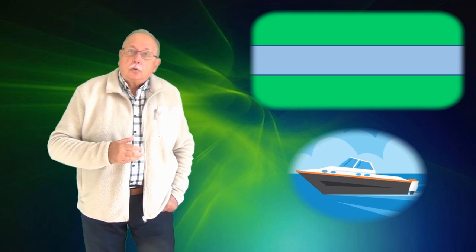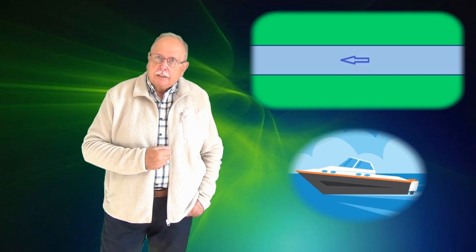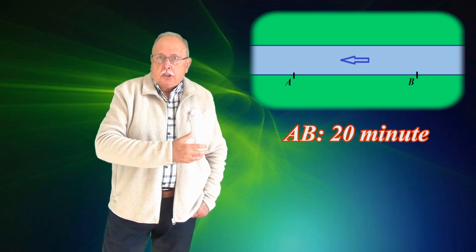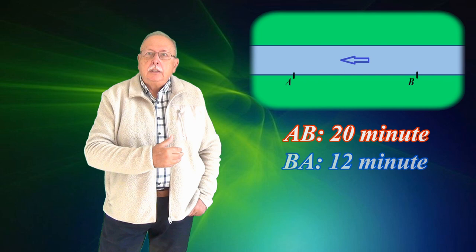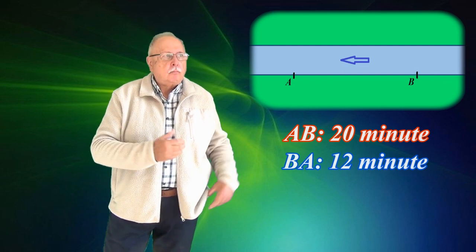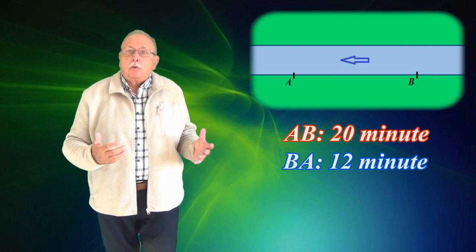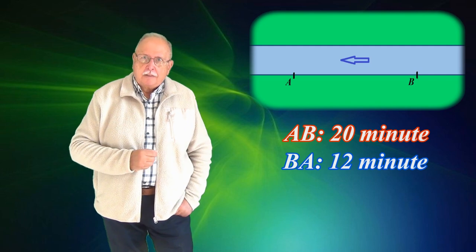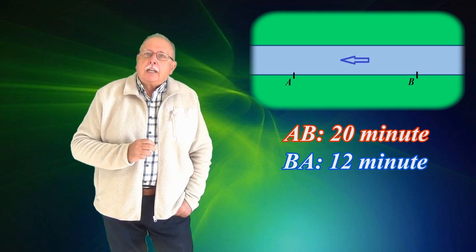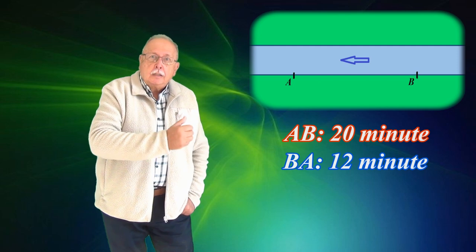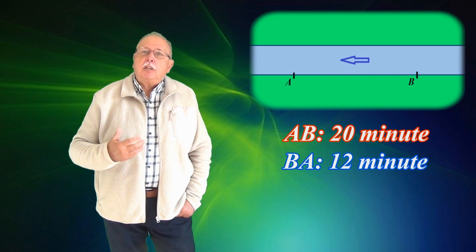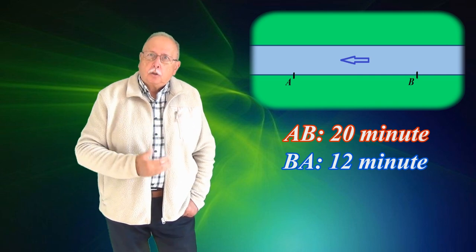Într-o zi în care apa curge în canal în sensul pe care îl vedeți, barca se deplasează din punctul A în punctul B în 20 de minute și înapoi, din B în A, în 12 minute. Precizez că apa curge tot timpul la fel, cu aceeași viteză și în același sens, atât la dus cât și la întors. Cu alte cuvinte, barca are nevoie de 20 de minute la dus plus 12 minute la întors, 32 de minute pentru a parcurge distanța AB dus-întors.